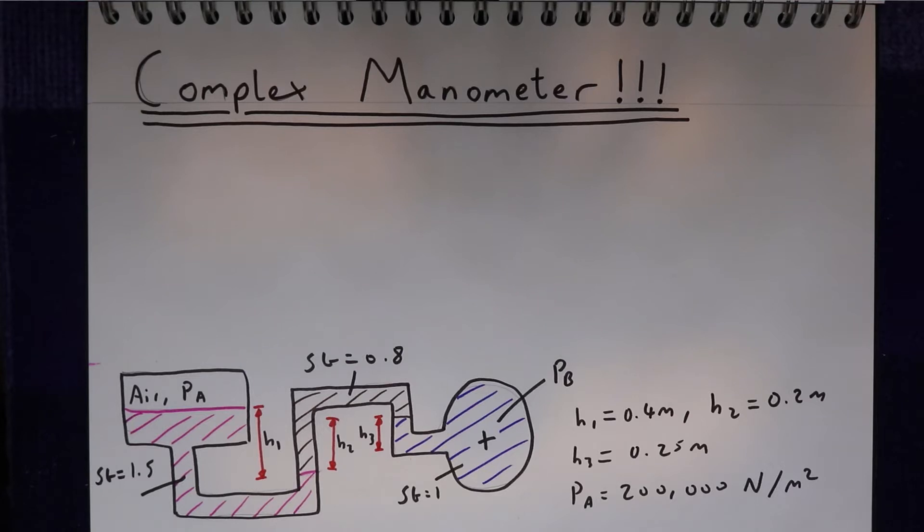So what we've got here is a pipe with pressure PB, and that's linked by two U-tubes to a chamber. The chamber has some level of liquid in it and some gas with pressure PA. The problem here is if you know the pressure in this chamber PA and you know the height of these fluids, can we work out the pressure in this pipe PB?